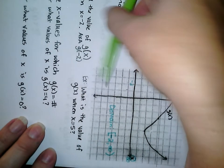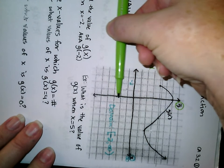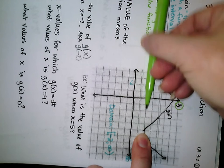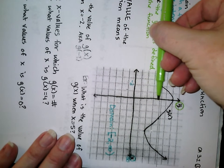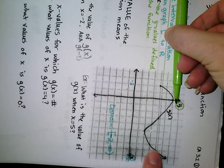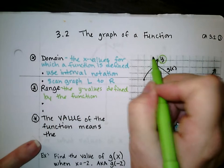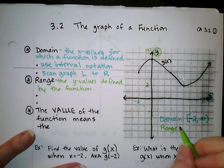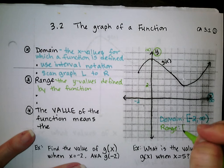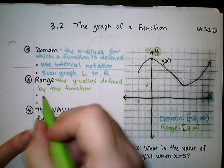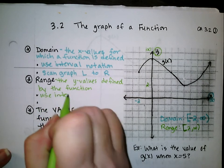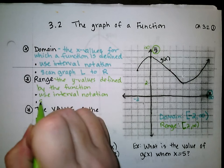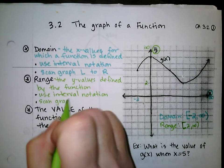We look at the y axis and ask: along this number line, what's the first y value we come across with this function? It's going to be y equals 2. Then we keep scanning, and the last y value we come across is an arrow, indicating infinity. So for the range, scanning from bottom to top, it would be positive 2 to infinity. Since there's an actual ordered pair there — not a hole or asymptote — it's a closed bracket from 2 to infinity. For range, we use interval notation and scan the graph from bottom to top.